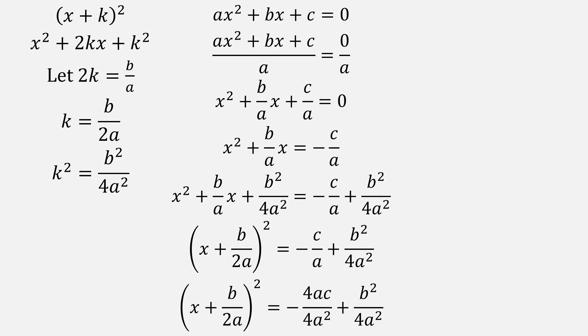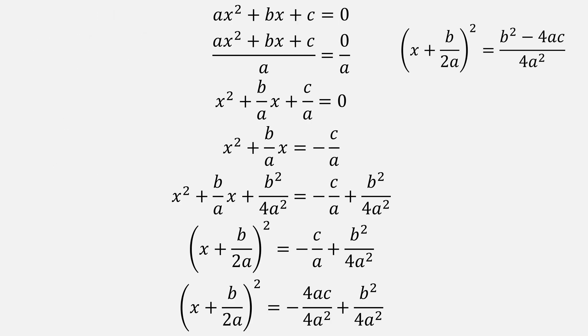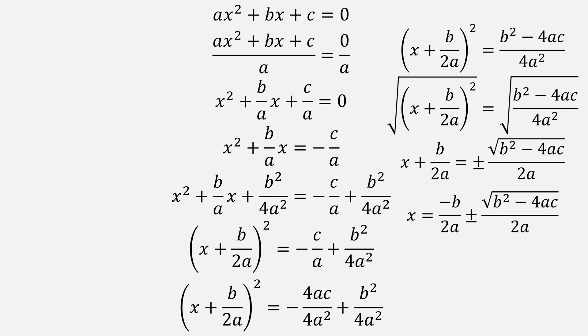The next thing we'll do is normalize our fractions on the right side. Then we can simplify our fraction and take the square root of both sides, giving us this form. Moving our b over 2a term to the right side and simplifying it gives us the quadratic equation.